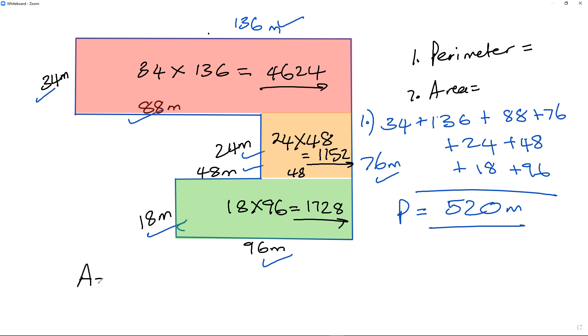And when I add all of that up, alright, my area is going to become 4624 plus 1152 plus 1728. And that'll come to the total over there. Alright, so 4624 plus 1152 plus 1728, and it'll be 7504 meters squared.